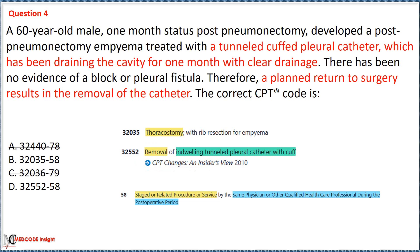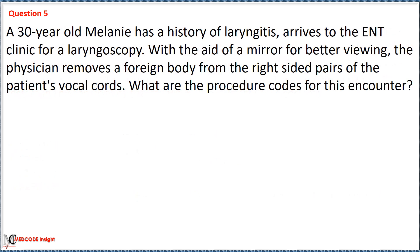Modifier 58 is used for a staged or related procedure or service by the same physician during the post-operative period. As the scenario involves the removal of the catheter, the correct option is Option D with code 32552, used for the removal of an indwelling tunneled catheter with the cuff.